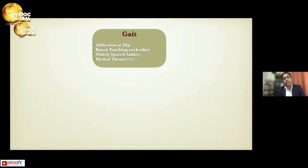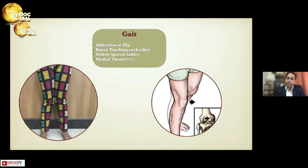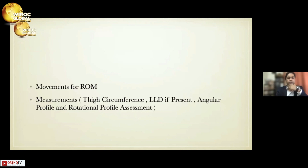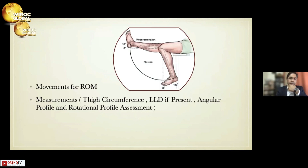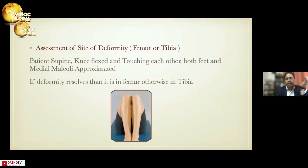These patients usually present with adduction at the hip, knees touching each other, widely spaced ankles, and medial thrust — this is the typical case of a genu valgus patient with deformity in the coronal plane. If the patient also has deformity in the sagittal plane, additional features may present. We need to assess range of motion and the site of deformity — whether femur or tibia — using simple clinical assessment methods.